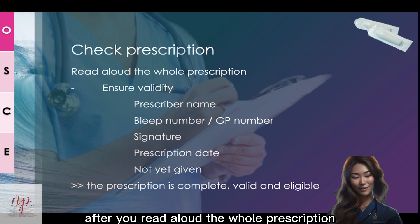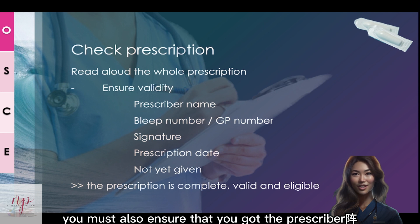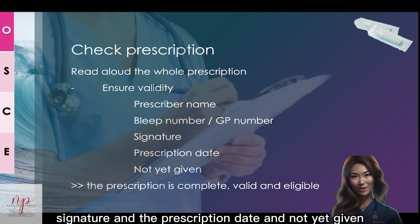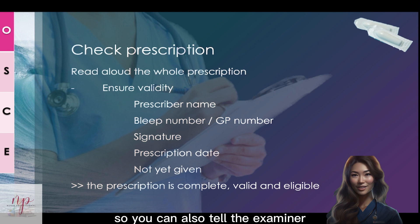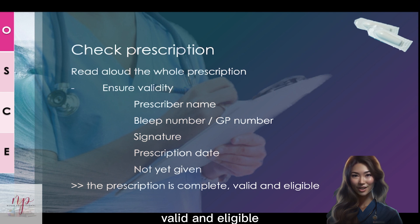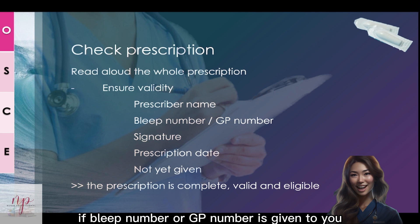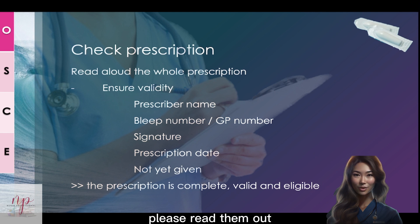After reading aloud the whole prescription, you must also ensure you have the prescriber's name, signature, and the prescription date, and that it has not yet been given. You can also tell the examiner that the prescription is complete, valid, and legible. If a BNF number or GP is given to you, please read them out.